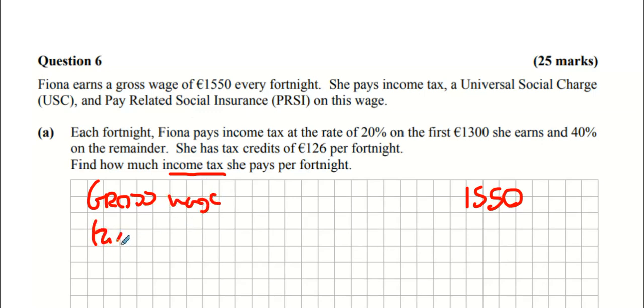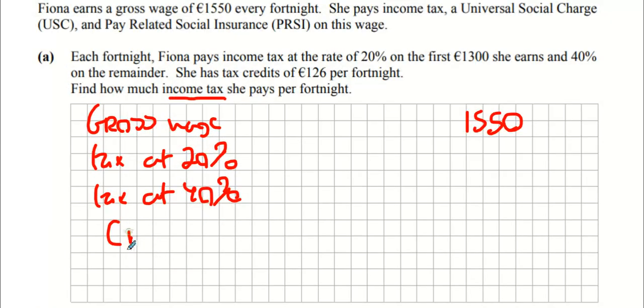You take away your tax credits. Tax credits is tax you don't pay. And then we get what's called income tax or tax payable. So let's go through that.